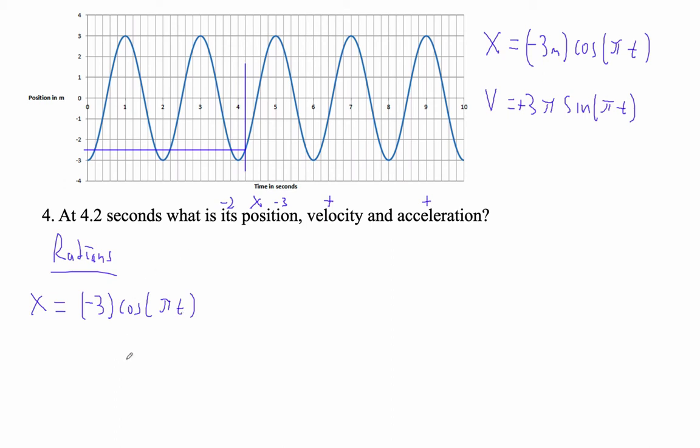Okay, so I'm going to go the opposite of 3, cosine of pi times 4.2. It needs to be a number between negative 2 and negative 3. In fact, it is. Look at that. It is negative 2.427 meters. Yay!